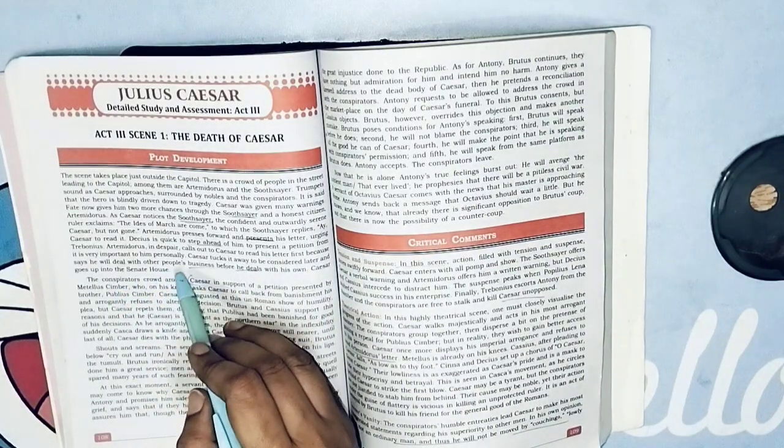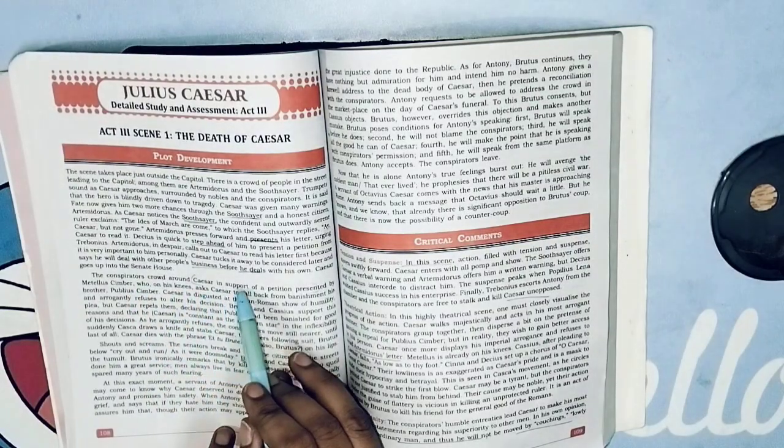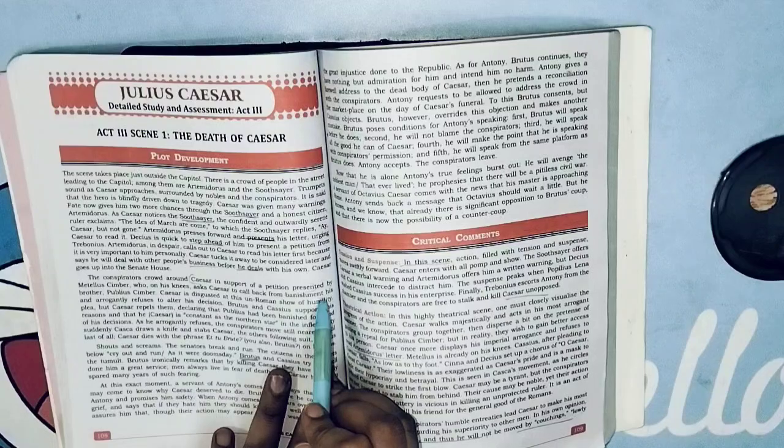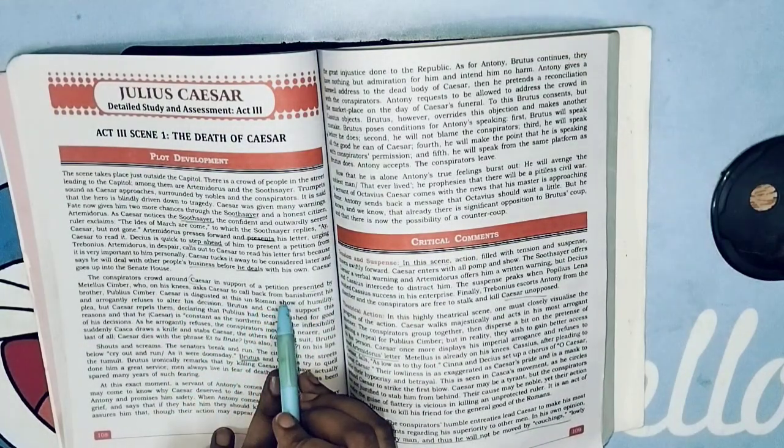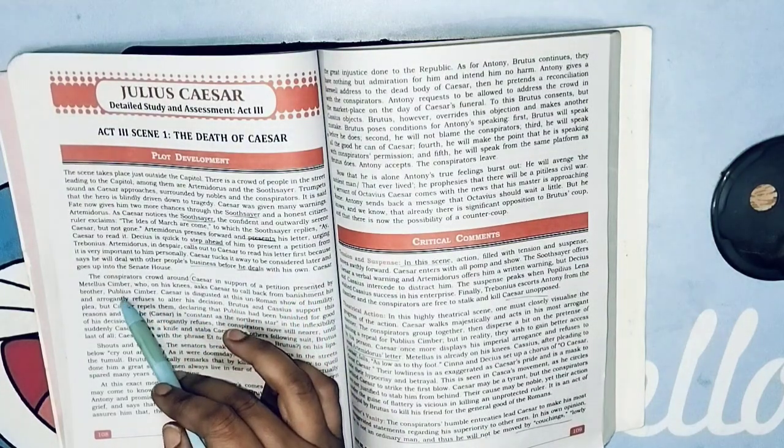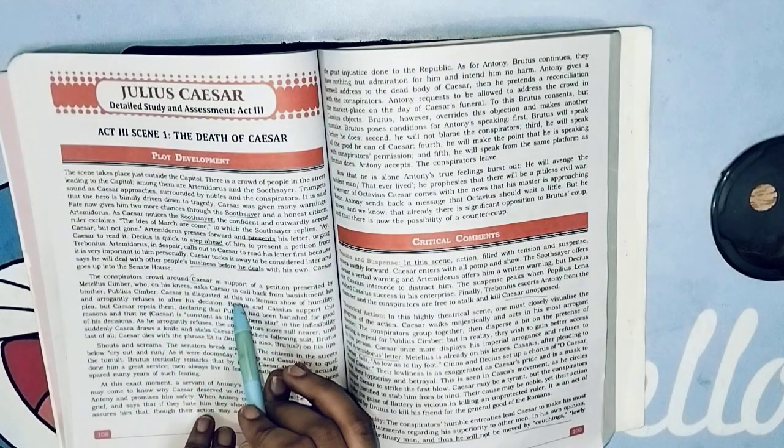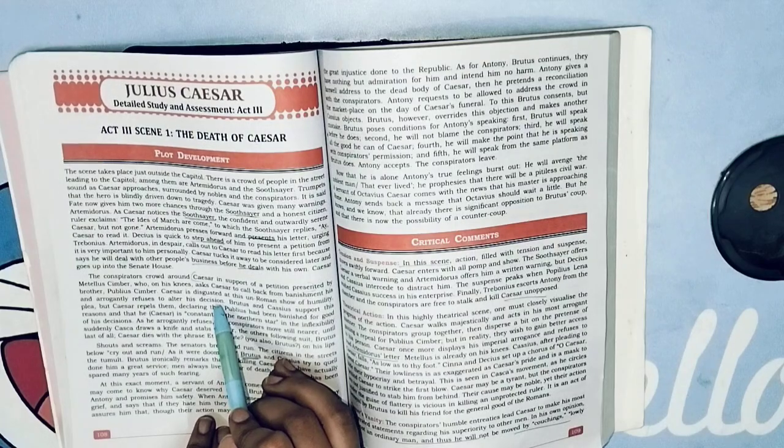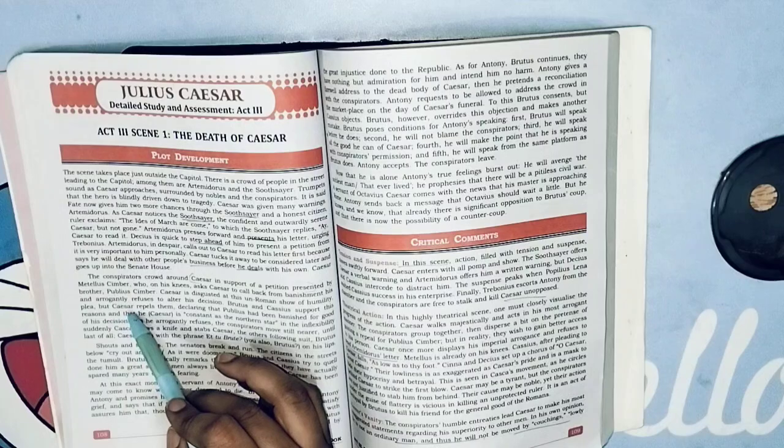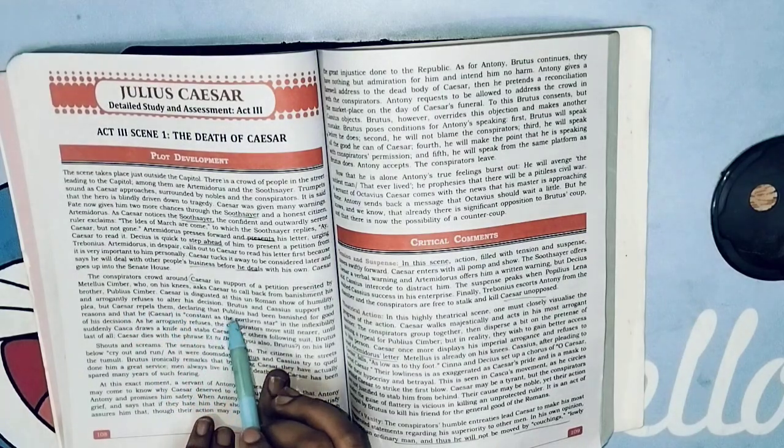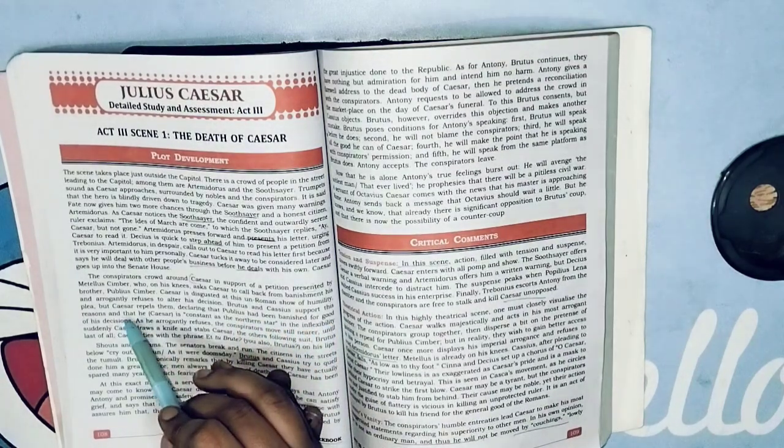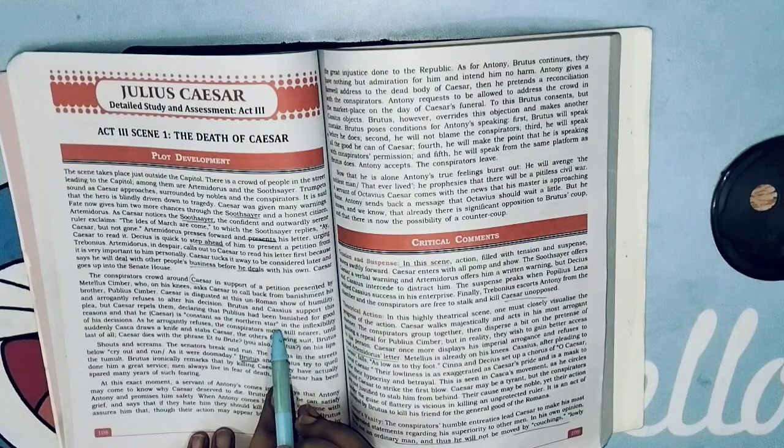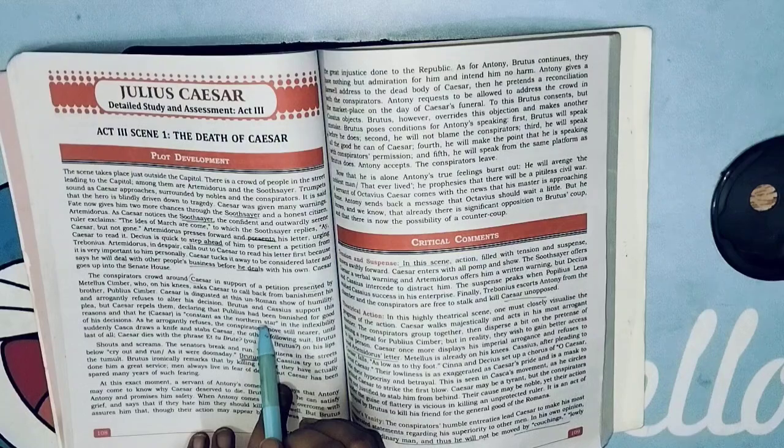Caesar goes up into the Senate house. The conspirators crowd around Caesar in support of a petition presented by Metellus Cimber, who on his knees asks Caesar to call back from banishment his brother Publius Cimber. Caesar is disgusted at this unroman show of humility and arrogantly refuses to alter his decision. Brutus and Cassius support this plea but Caesar repels them, declaring that Publius had been banished for good reasons and that he is constant as the northern star.